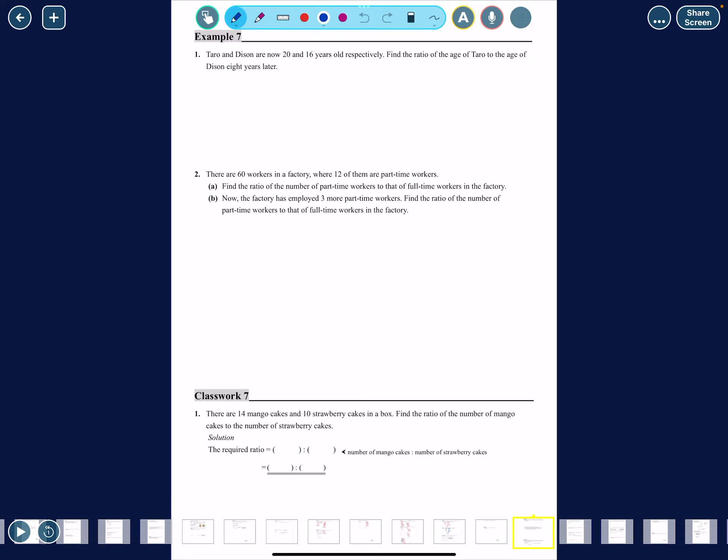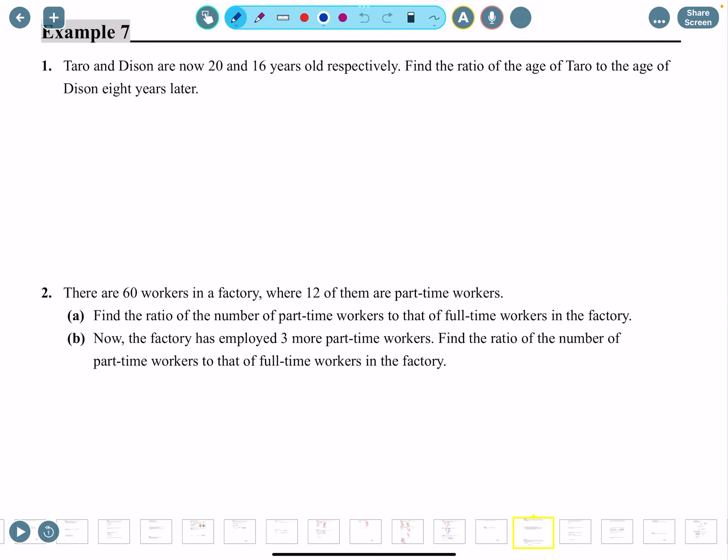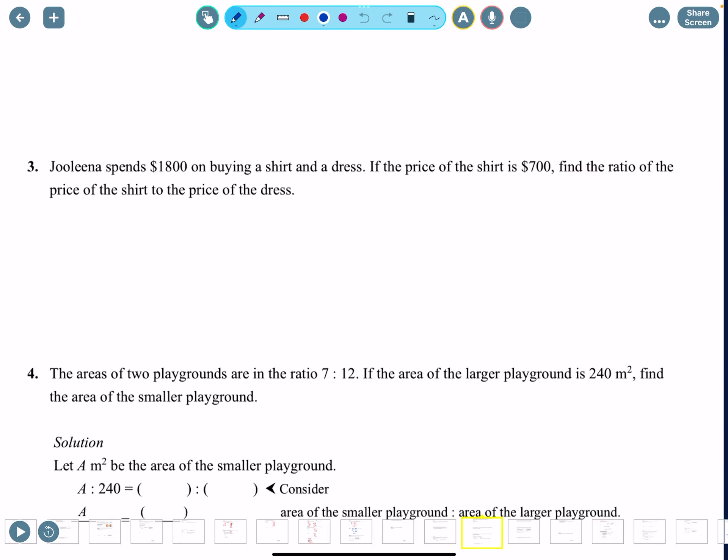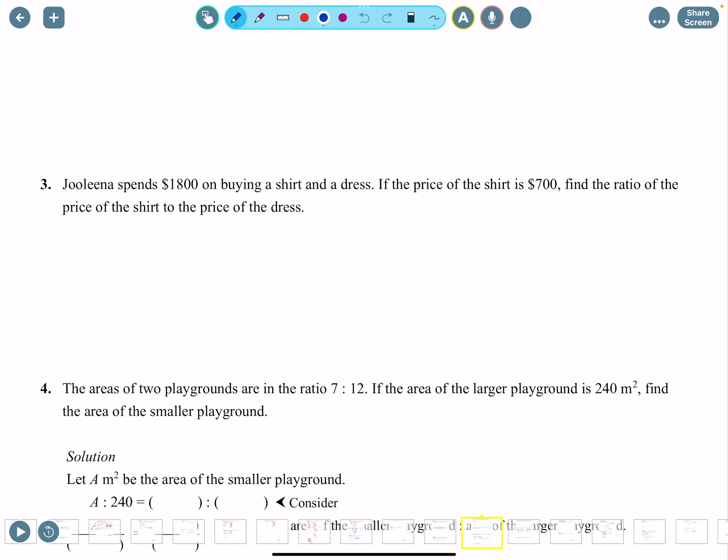We have more questions here. Let's do some classwork. Julina spends $1,800 on buying a shirt and a dress. If the price of the shirt is $700, find the ratio of the price of the shirt to the price of the dress. First you have to identify price of the shirt to the price of the dress - that's our end goal.